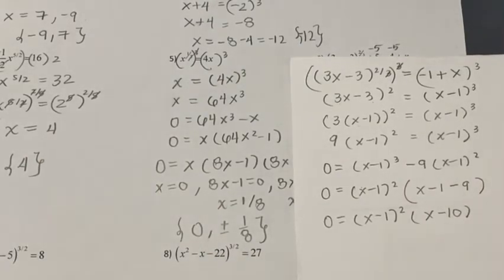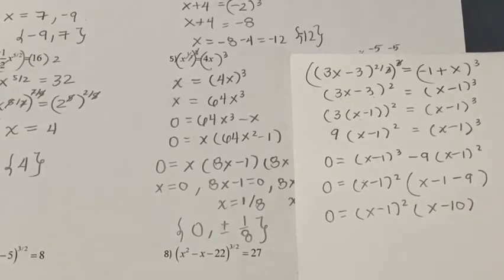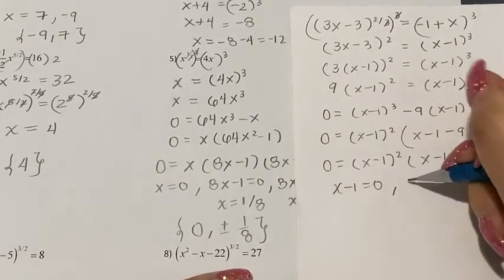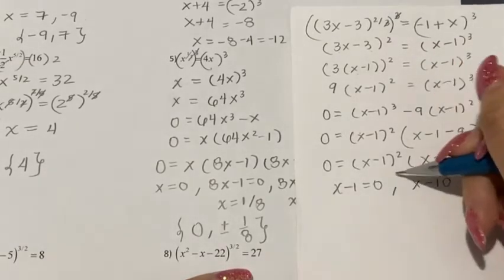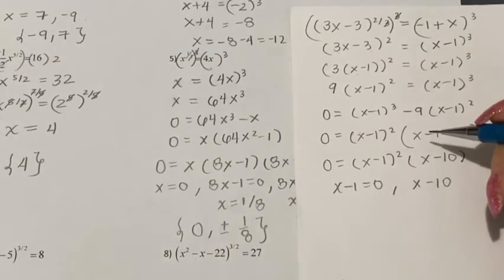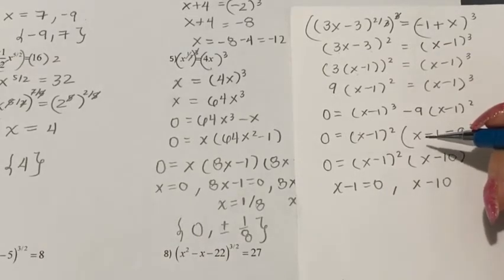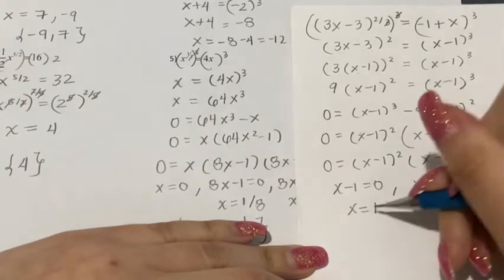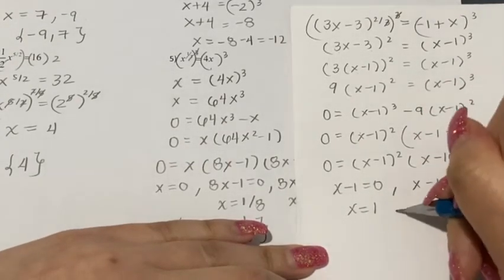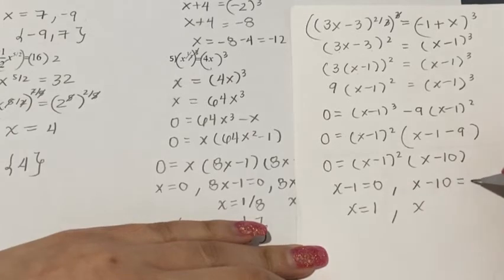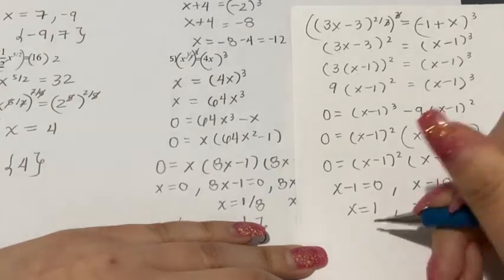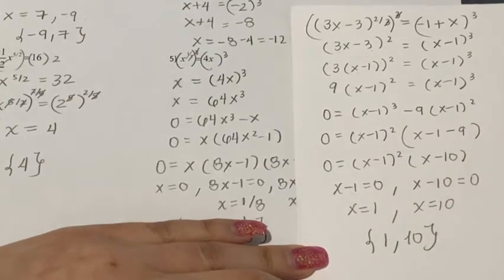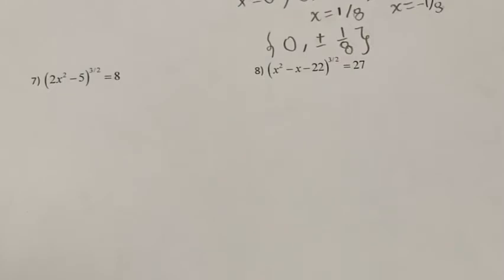Factoring out x minus one squared: zero equals x minus one squared times the quantity x minus one minus nine, which simplifies to x minus one squared times x minus ten. Setting each factor to zero gives x equals one as a double root, and x minus ten equals zero gives x equals ten. The two solutions are x equals one (double root) and x equals ten.